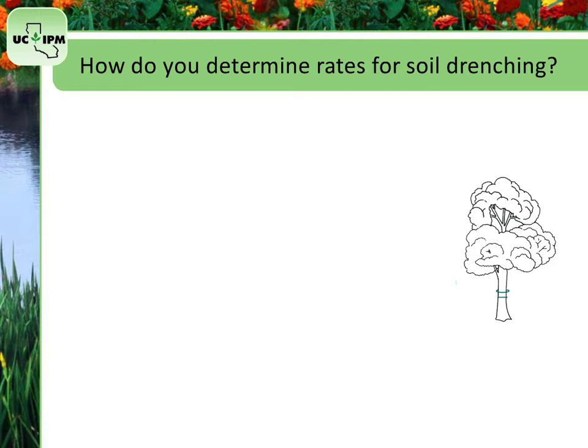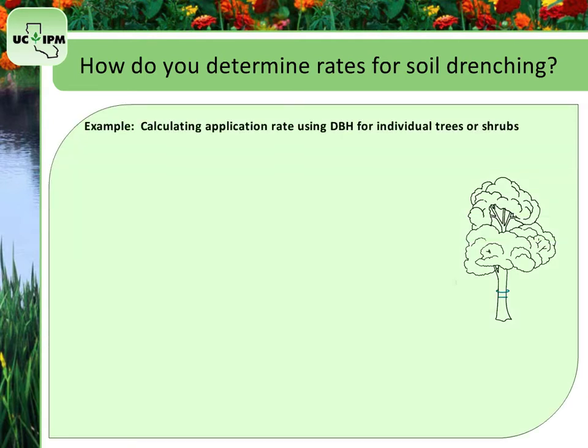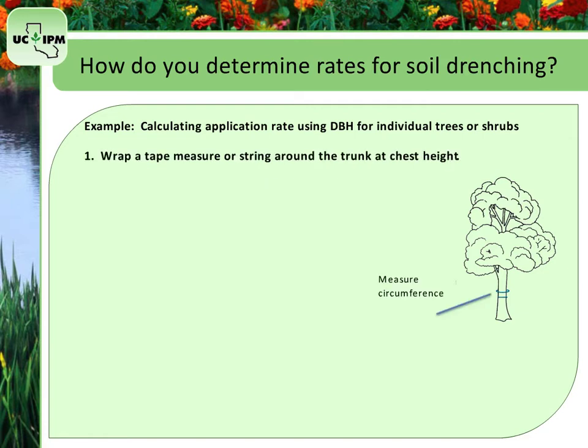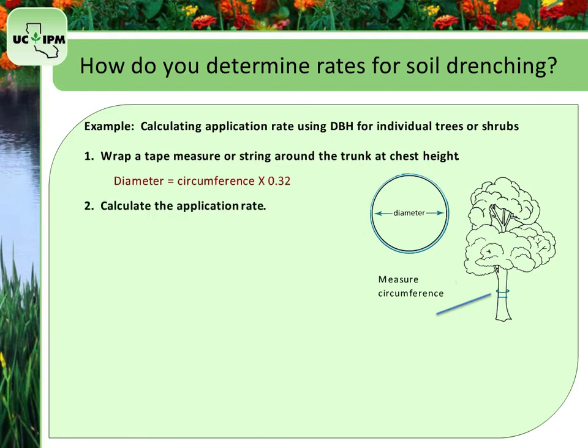Let's look at an example where the label requires you to determine the diameter or circumference of the tree at chest height. To do this, wrap a tape measure or string around the trunk at chest height. Once you know the circumference, find the diameter by multiplying the circumference by the conversion factor of 0.32. Once you determine the size of the tree you are treating, you can calculate the application rate.